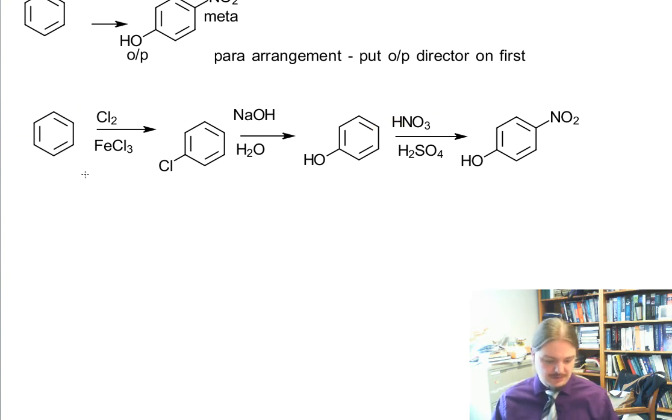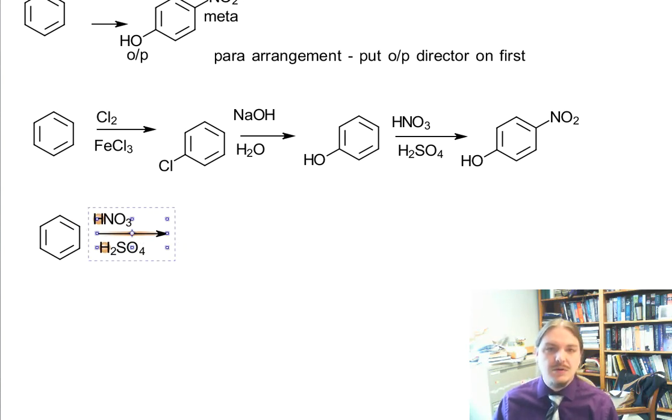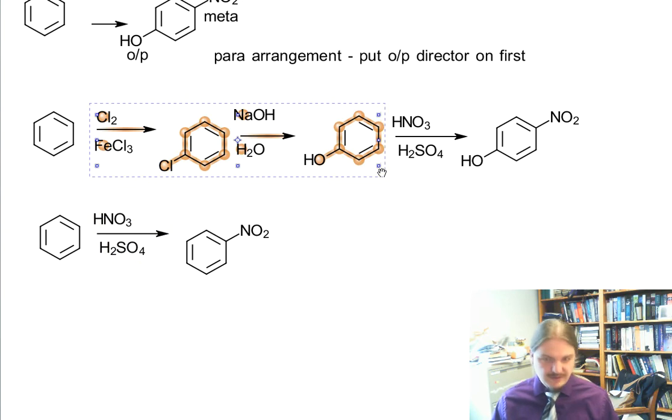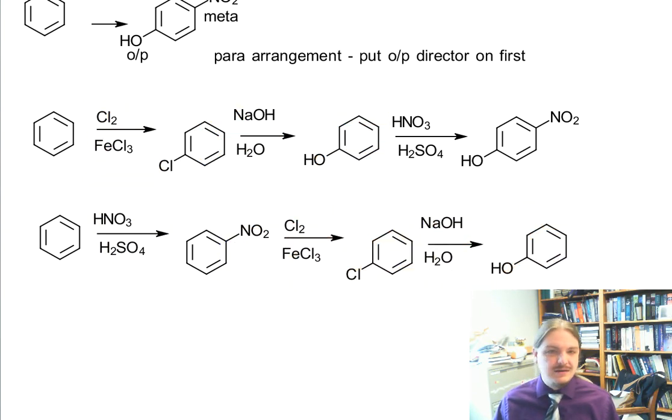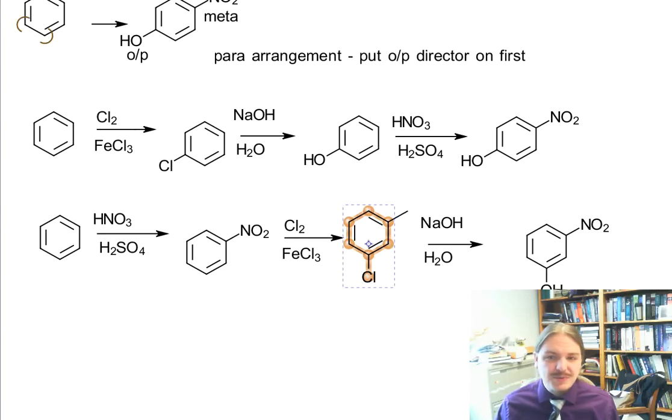So chlorination needs to be first. Let me just draw that outcome here. So then if we did chlorination on nitrobenzene, followed by nucleophilic aromatic substitution, we wouldn't get the chlorine where we wanted it. We'd get chlorine meta and we would get OH meta. And actually this wouldn't even be as well controlled a nucleophilic aromatic substitution reaction because it's not ortho para to an electron withdrawing group. So it would be messier overall.